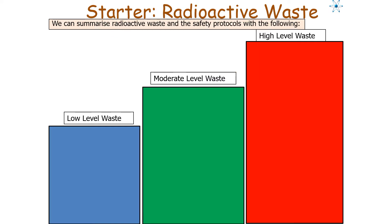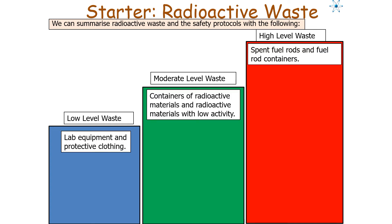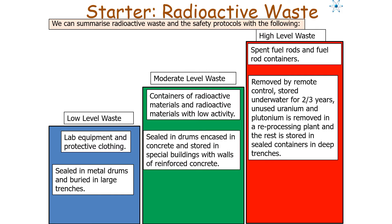To summarise: low-level waste includes lab equipment and protective clothing — sealed in metal drums and buried in large trenches. Intermediate-level waste includes containers of radioactive materials and materials with low activity — sealed in drums, encased in concrete, and stored in special buildings with reinforced concrete walls. High-level waste includes spent fuel rods and fuel rod containers — removed by remote control, stored underwater for 2 to 3 years, unused uranium and plutonium removed at a reprocessing plant, with the rest stored in sealed containers in deep trenches.